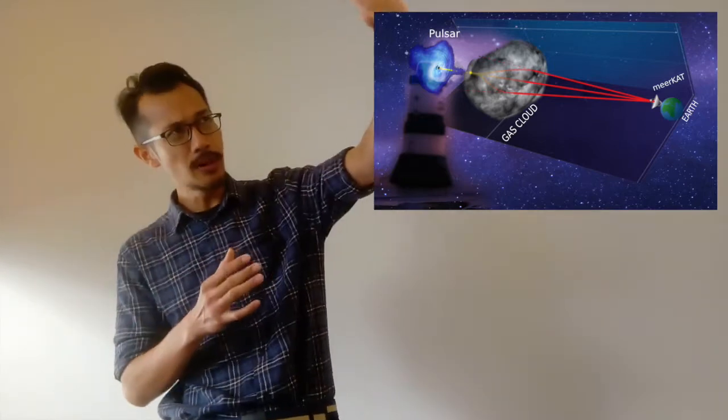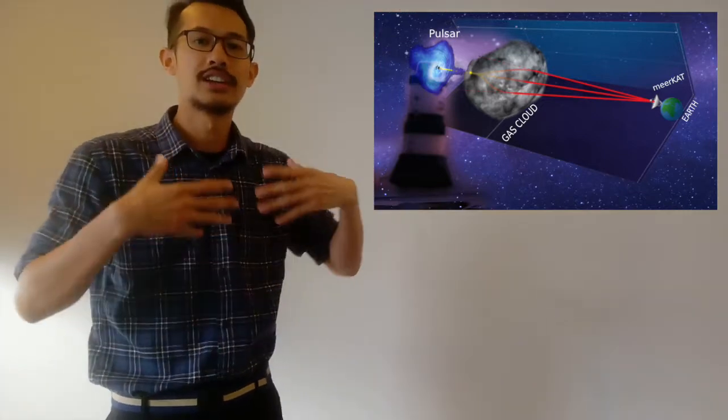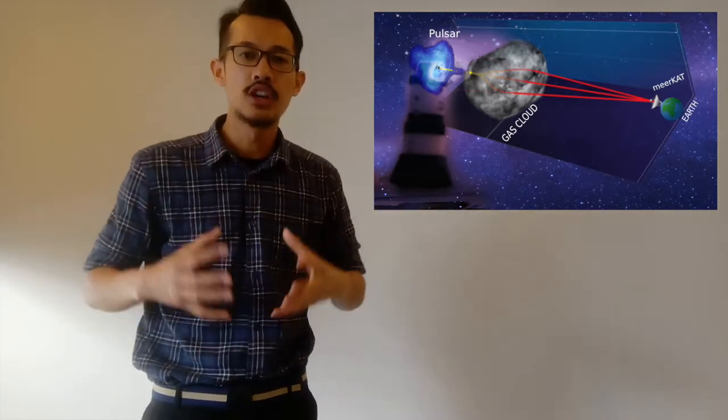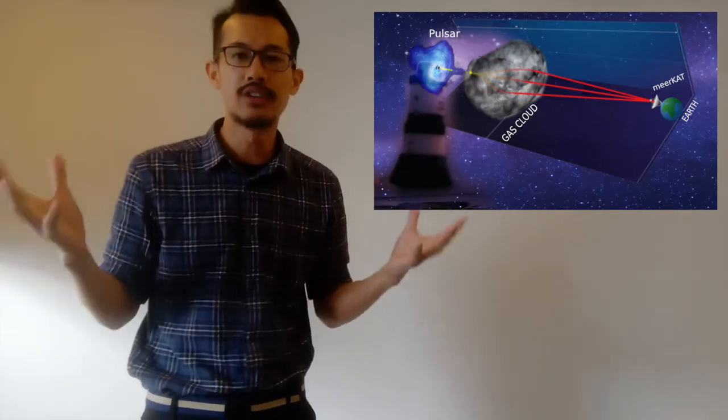we are better able to see the pulsar through the storms of ionized gas, thus improving their timing measurements that can detect gravitational waves created by colliding supermassive black holes somewhere in the universe.